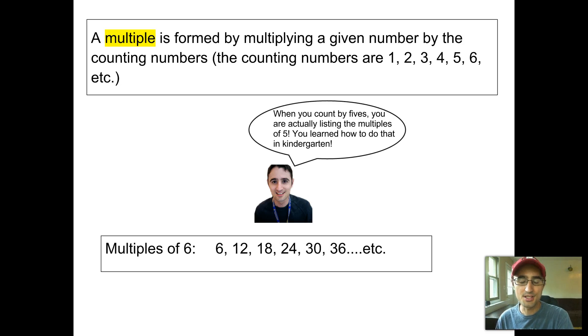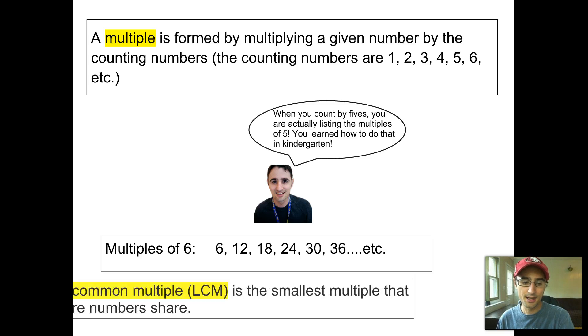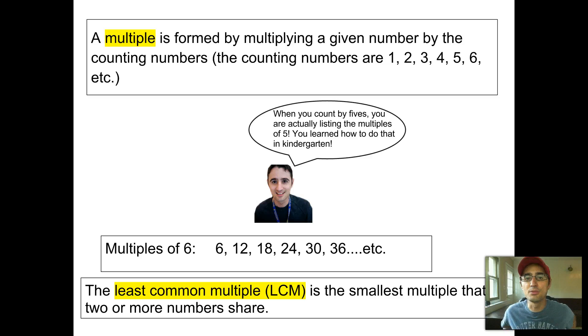If we count by sixes, we have six, 12, 18, 24, 30, 36. That goes on forever to infinity and beyond. So the last term we want to talk about is the least common multiple or LCM. That's the smallest multiple that two or more numbers share. Now there are going to be an infinite amount of common multiples. So we really want to pick the very first one, the least or smallest one to ground our conversation. Otherwise, they could just go on forever.